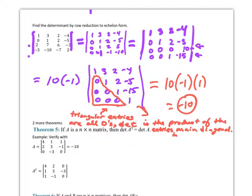So the triangular entries are all zeros, the determinant is the product of all the entries in the main diagonal. So all this means 10 times negative 1 times 1 is my answer. So the determinant of that matrix that we start off with is negative 10. Not so bad, huh?